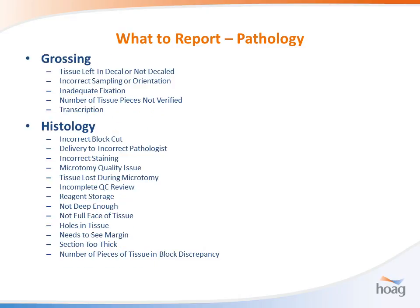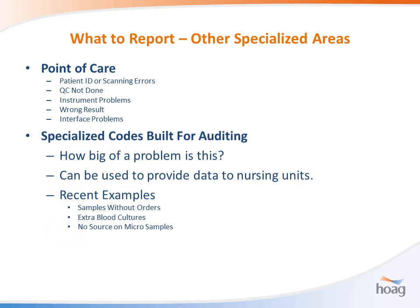We develop specialized codes for auditing something specific that may not even be a non-conforming event. For example, we're having problems with samples arriving in the laboratory before orders are placed in CPOE, which causes a bottleneck in our processing area. So we developed a code and told staff to write every one of those up so we can get a feel for how big the problem is, where it's happening, and provide feedback to our customers. Extra blood cultures in microbiology and no source written on the microbiology sample label are also being audited this year. You can use your non-conforming event system not just for NCEs, but to gauge the scope of a problem.